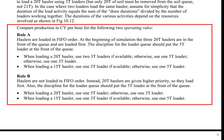At the beginning of simulation, the three 20-ton haulers are in the front of the queue and are loaded first. The discipline for the loader queue puts the 5-ton loader at the front of the queue. Operating rule A is as follows: when loading a 20-ton hauler, use two 3-ton loaders if available; otherwise, use one 5-ton loader; otherwise, use one 3-ton loader.